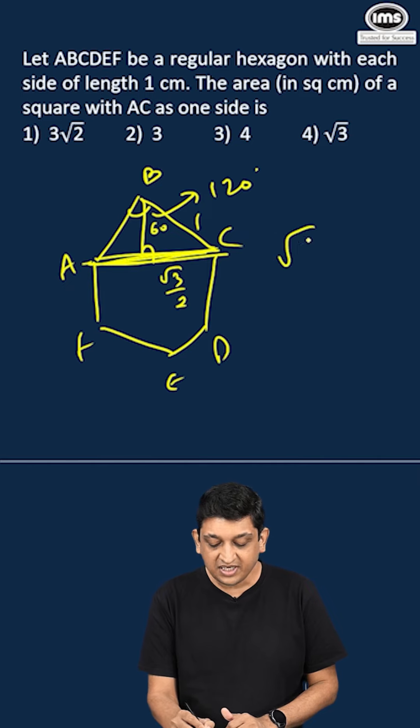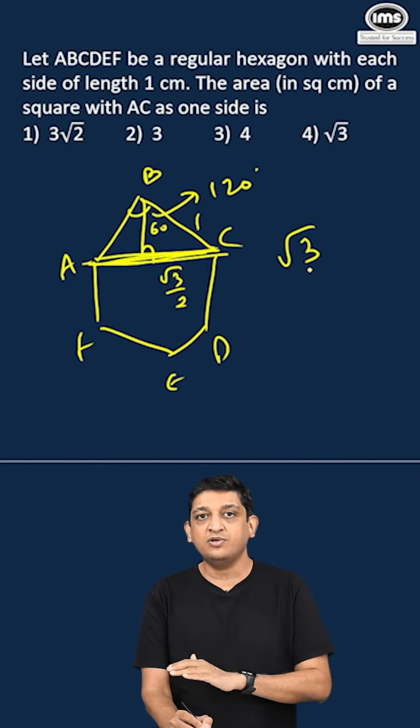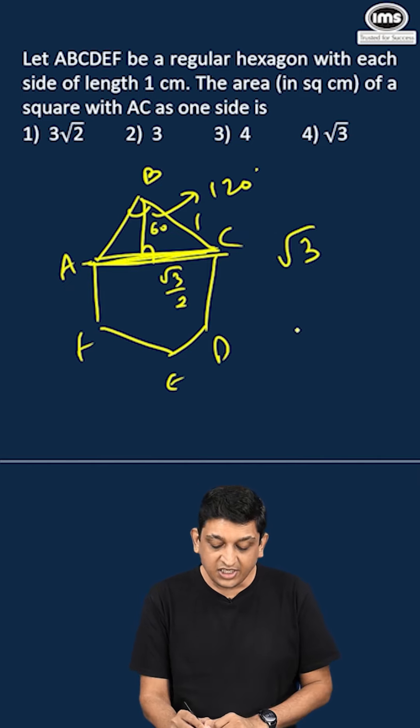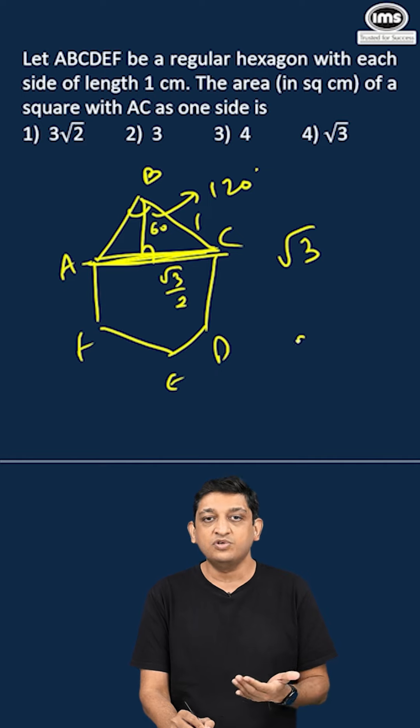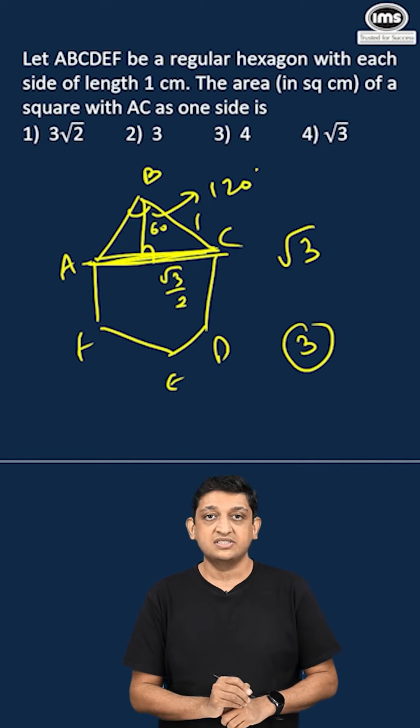The length of AC becomes √3/2 plus √3/2, that is √3. And so the area of the square will be the square of √3, or 3 square units.